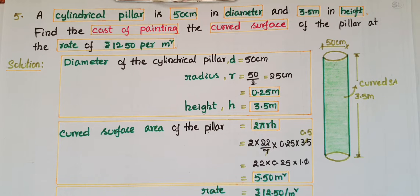Hello everyone, today I am going to tell the solution of the fifth problem from Exercise 13.2 on Surface Areas and Volumes from NCERT Class 9. A cylindrical pillar is 50 centimeters in diameter and 3.5 meters in height. Find the cost of painting the curved surface of the pillar at the rate of 12.50 rupees per meter square.